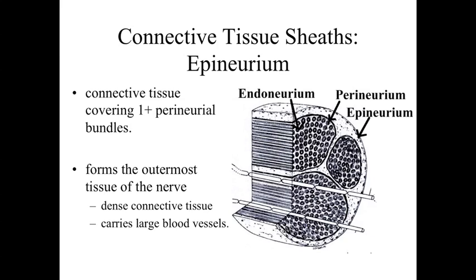Outside of that, we're going to have an epineurium — the outermost layer around a nerve. In many cases, this applies to more named nerve structures or larger nerves, where you're going to have multiple bundles surrounded and supported by a denser connective tissue. You're going to find lots of collagen, lots of fibroblasts within this area, and larger blood vessels. So: endoneurium — very fine connective tissue, probably produced by the Schwann cells; perineurium — forming a cluster or bundle of axons; and epineurium — the outermost surrounding layer of dense connective tissue holding generally more than one perineurial bundle together.